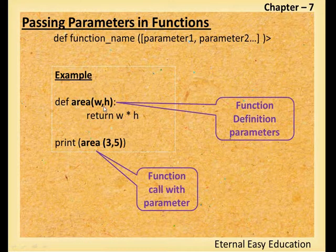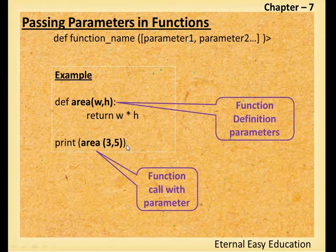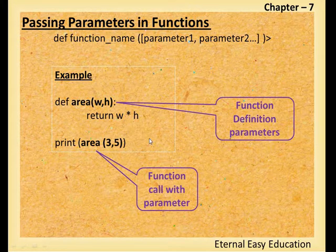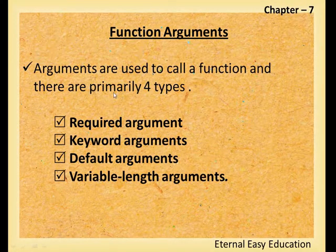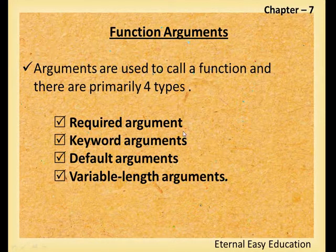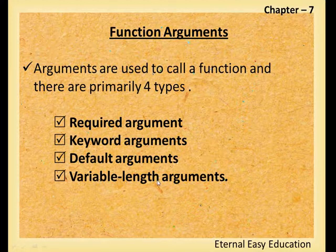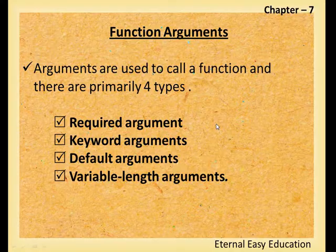To clarify: variables used in the function definition are parameters, and the values passed in the function call are arguments. When the function is called with parameters, it can be of four types: required arguments, keyword arguments, default arguments, and variable length arguments. We will see each one by one with an example.